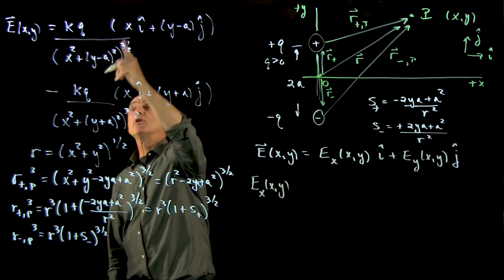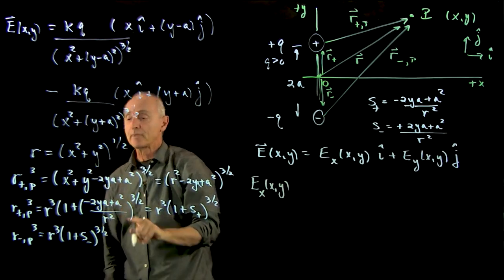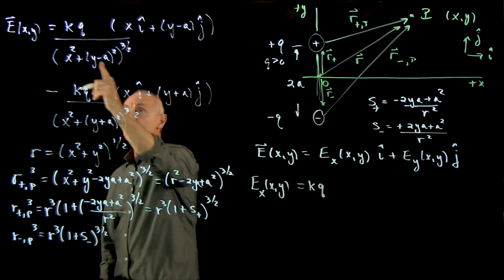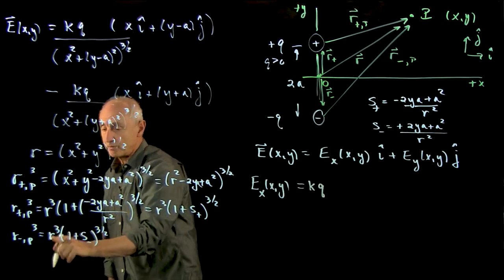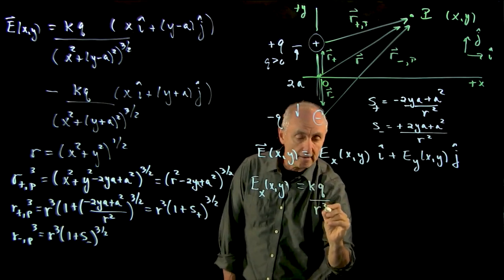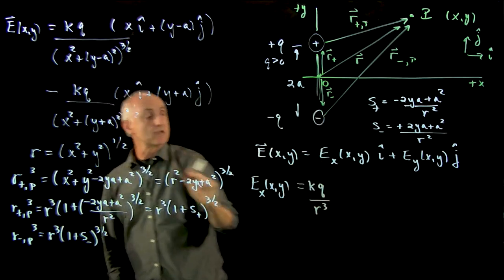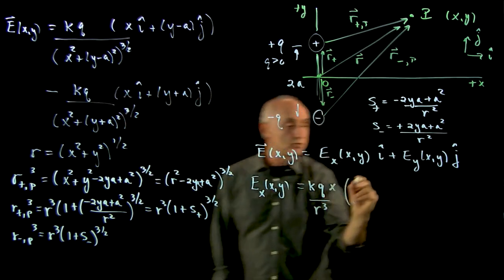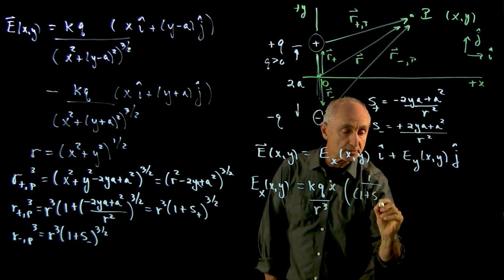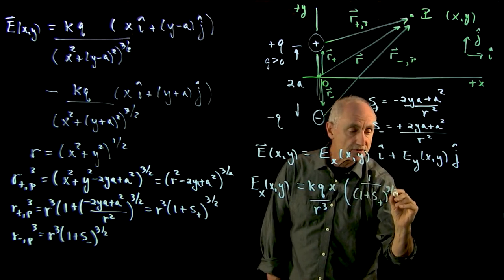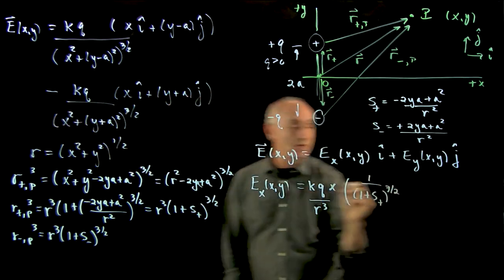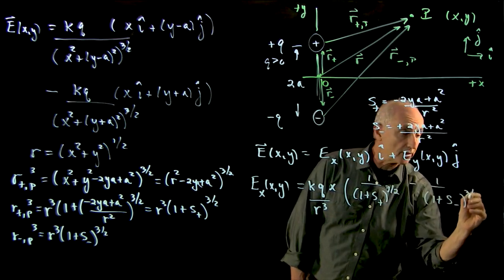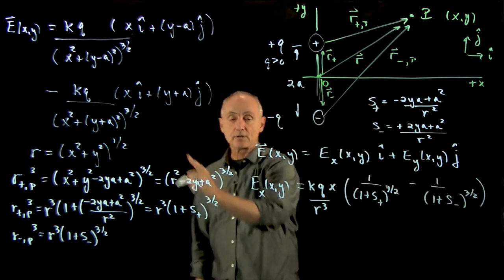What I'm doing is I'm taking this first term component, subtracting from that. We see both terms have our constant k cubed. In the denominators, both of them have an r cubed. In both numerators, there is an x. And the only difference is the denominator here is 1 over 1 plus s_plus to the 3 halves. And the other one is a minus, minus 1 over 1 plus s_minus to the 3 halves. And that's our x component.